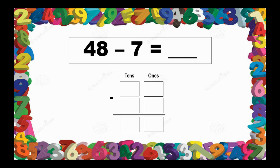Next, 48 minus 7. We write 48 in the place value chart: the 8 in the 1s place and the 4 in the 10s place. Since 7 is a 1-digit number, we write 7 in the 1s place. Subtract the 1s: 8 minus 7 equals 1. Then bring down 4, or 4 minus 0 equals 4. So, 48 minus 7 equals 41.